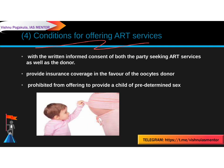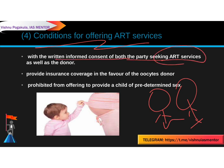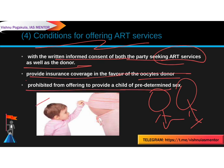A clinic is prohibited from offering services for a child of predetermined sex — a commissioning couple cannot request a male or female child specifically. The bill also requires checking for genetic diseases before the embryo implantation. So the conditions for offering ART services include: written informed consent of both parties, insurance coverage for the oocyte donor, and prohibition on sex-selective services.